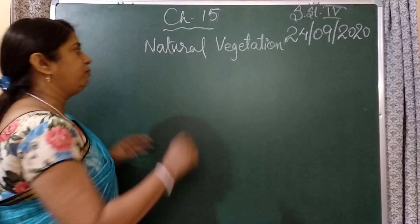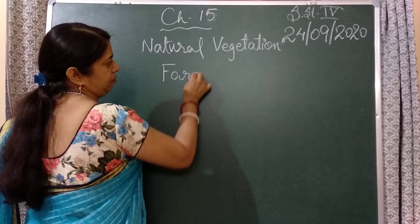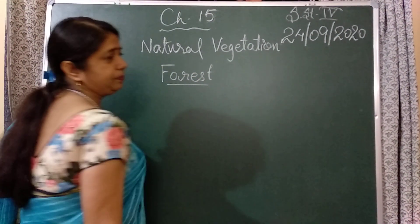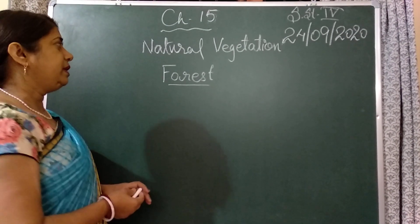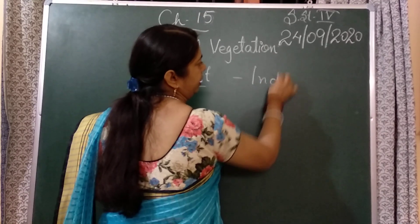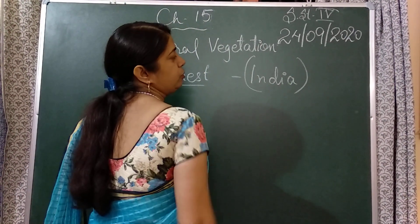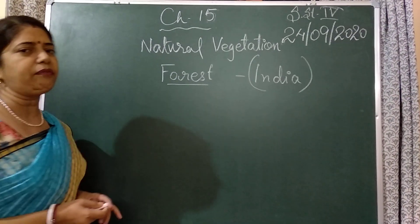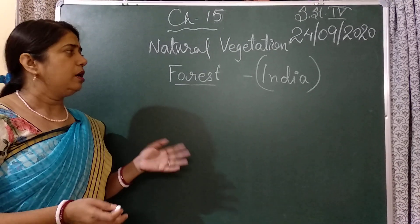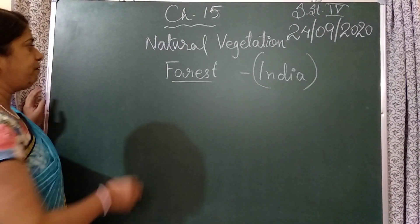Natural Vegetation is related to forest, but what other things come under this? We live in India and we are talking about Indian Vegetation. India has different types of climates, different types of soils, different types of atmosphere, and different types of places. So the forests will also definitely be different, and there are types of forests.